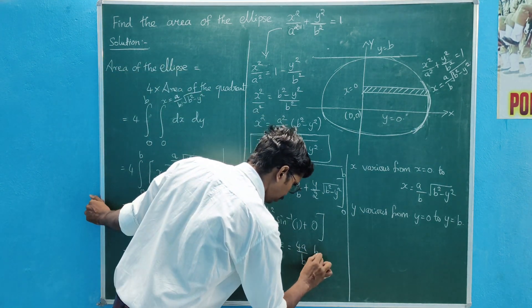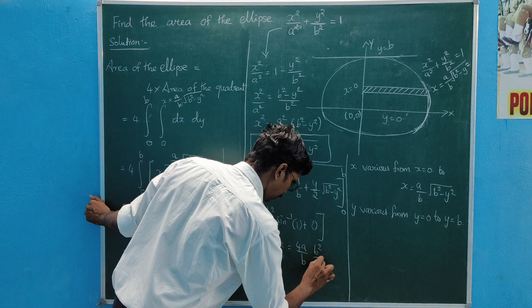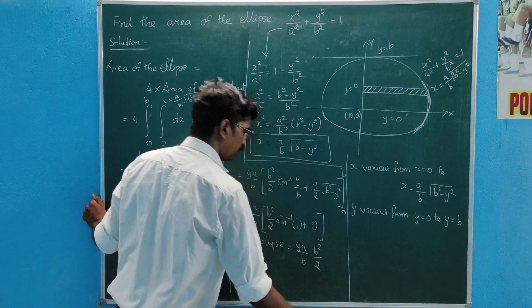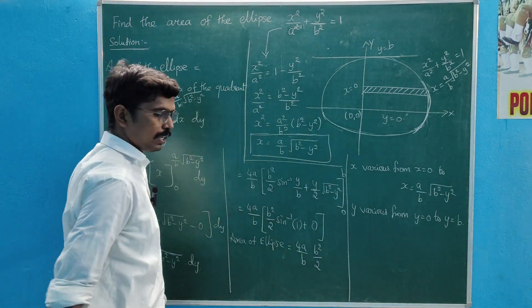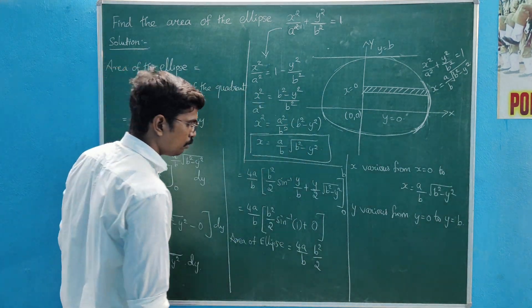b²/2, sin inverse, sin inverse — applying the upper limit gives sin⁻¹(1), which equals π/2.